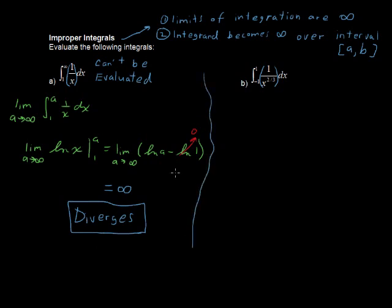and then we can say, nope, can't do it. Okay, the next one. This meets the second scenario. The integrand becomes infinity somewhere over the interval, and it's not at the limit of negative 1 or 1.